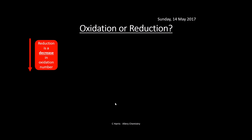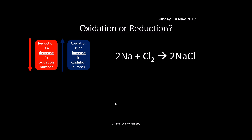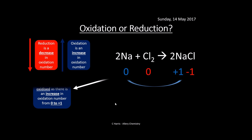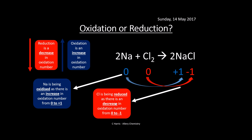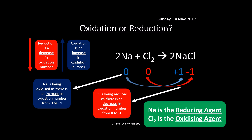We can use oxidation numbers to determine whether oxidation or reduction is occurring. A decrease in oxidation number is reduction; an increase is oxidation. In the reaction of Na with Cl₂ to form NaCl: sodium's oxidation number increases from zero to plus one, so it's being oxidised. Chlorine's oxidation number decreases from zero to minus one, so it's being reduced. Therefore sodium is the reducing agent - it has been oxidised itself - and chlorine is the oxidising agent because it is being reduced.